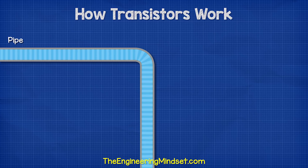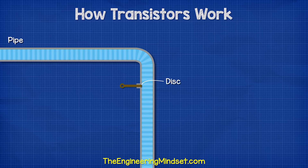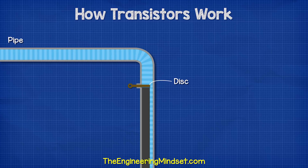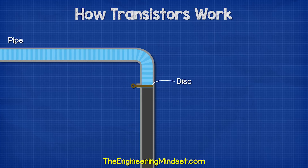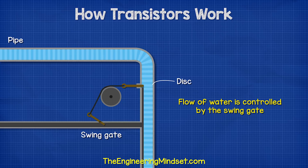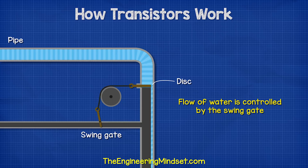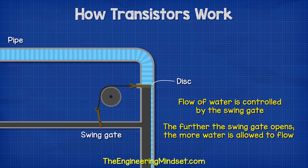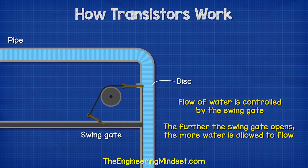It flows freely through the pipe until we block it with a disk. If we connect a smaller pipe into the main one and place a swing gate within this small pipe, we can move the disk using a pulley. The further the swing gate opens, the more water is allowed to flow in the main pipe.